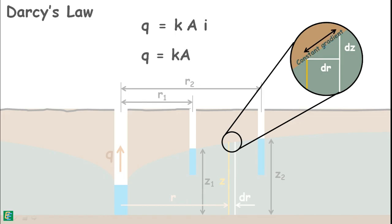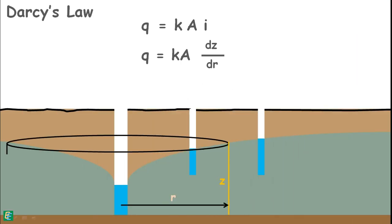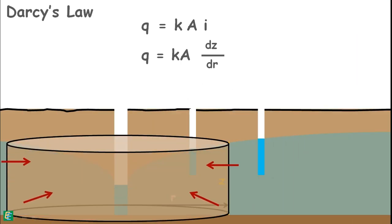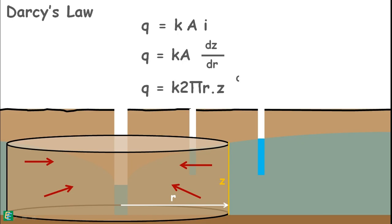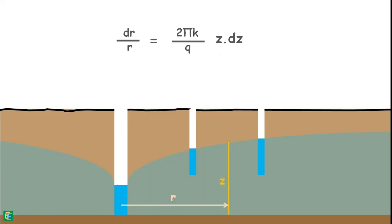And that will equal the change in the head divided by the distance over which the change occurs. The area through which water is percolating by this hydraulic gradient is this cylindrical area of radius r and height z. Surface area of this cylindrical surface is 2πrz. Rearrange it like this.